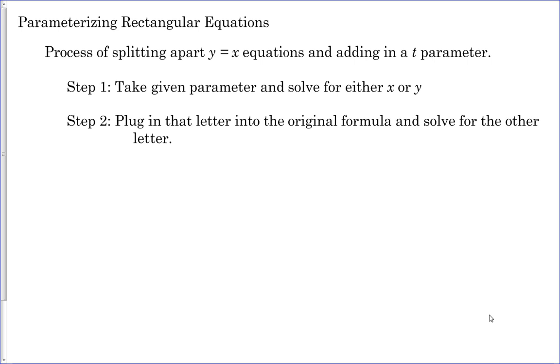This is a two-step program. You take the given parameter and solve for either x or y. It will only have one variable. It'll either be x or it'll either be y. So you solve for either x or y, whichever is there.